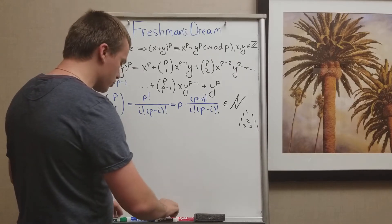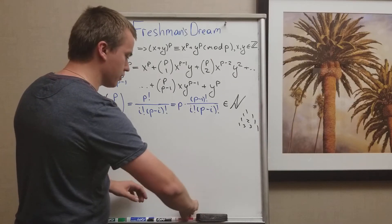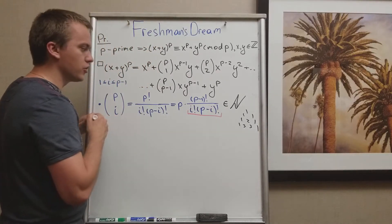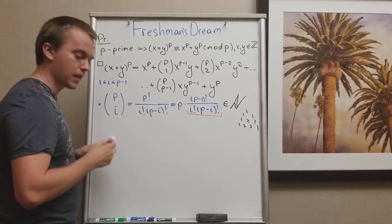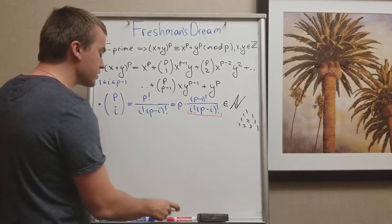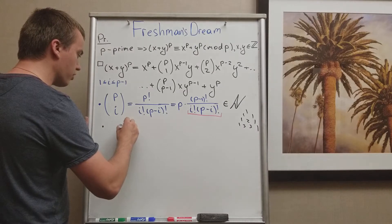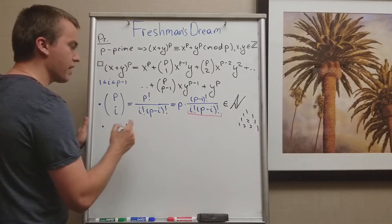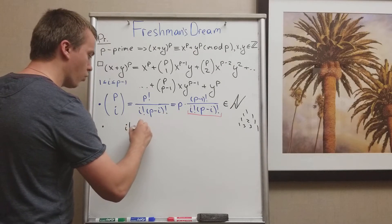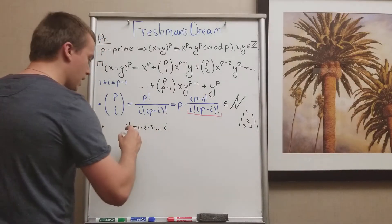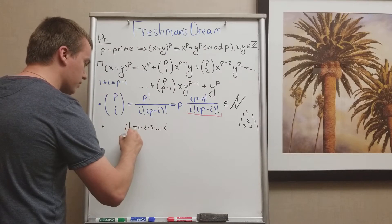And what we want to show, we want to show that any factor on the bottom, so any factor from this, is not going to divide our p. And this is true. And why is this true? Because we know that our i factorial, we have factors only 1 times 2 times 3, and so on, times i. And for p minus i factorial, we have factors 1 times 2 times 3, and so on, times p minus i.